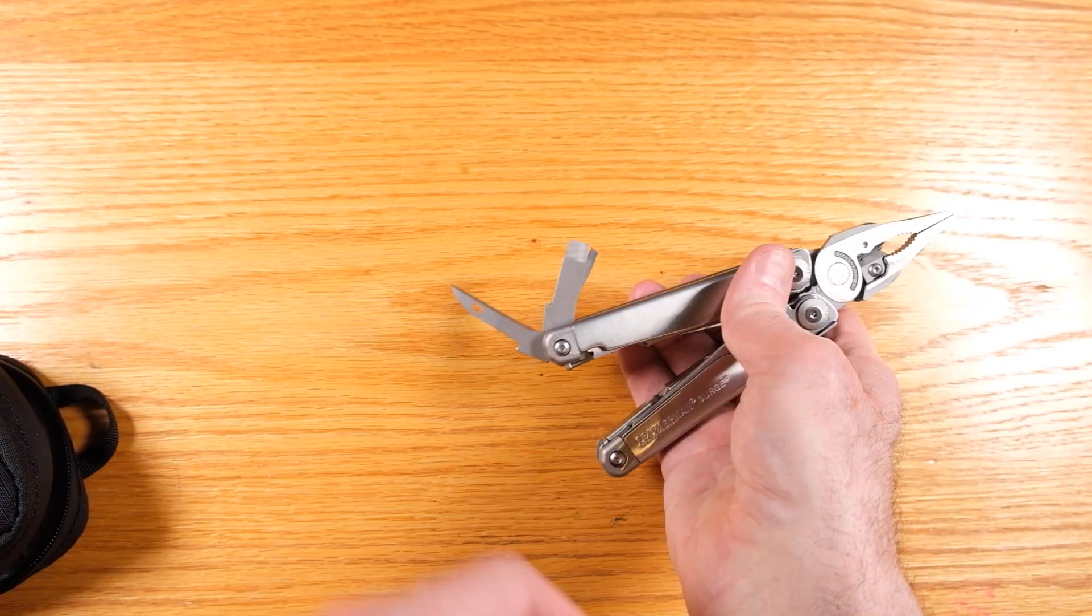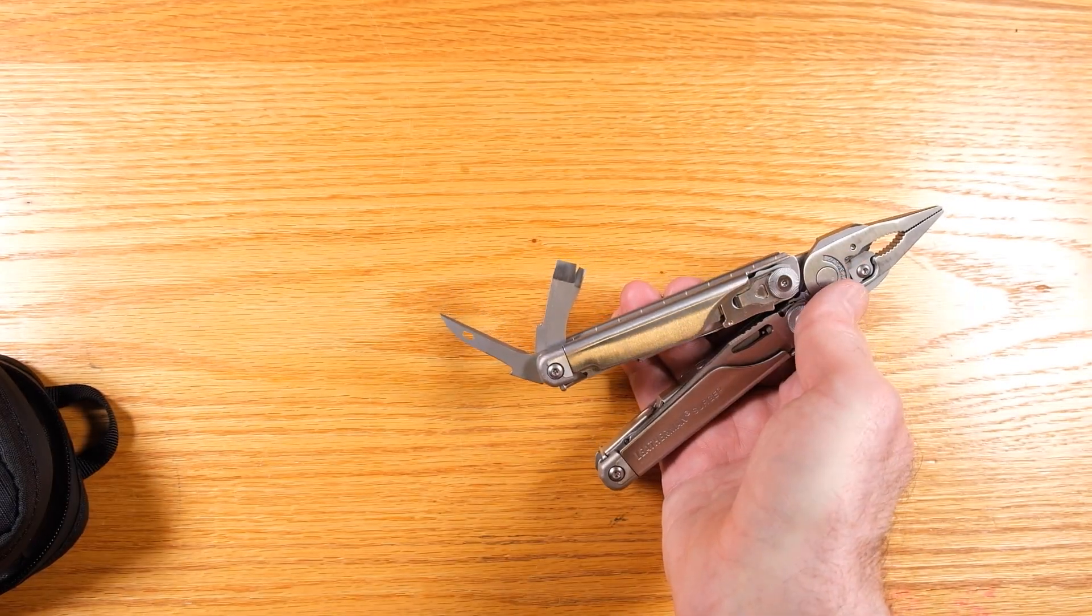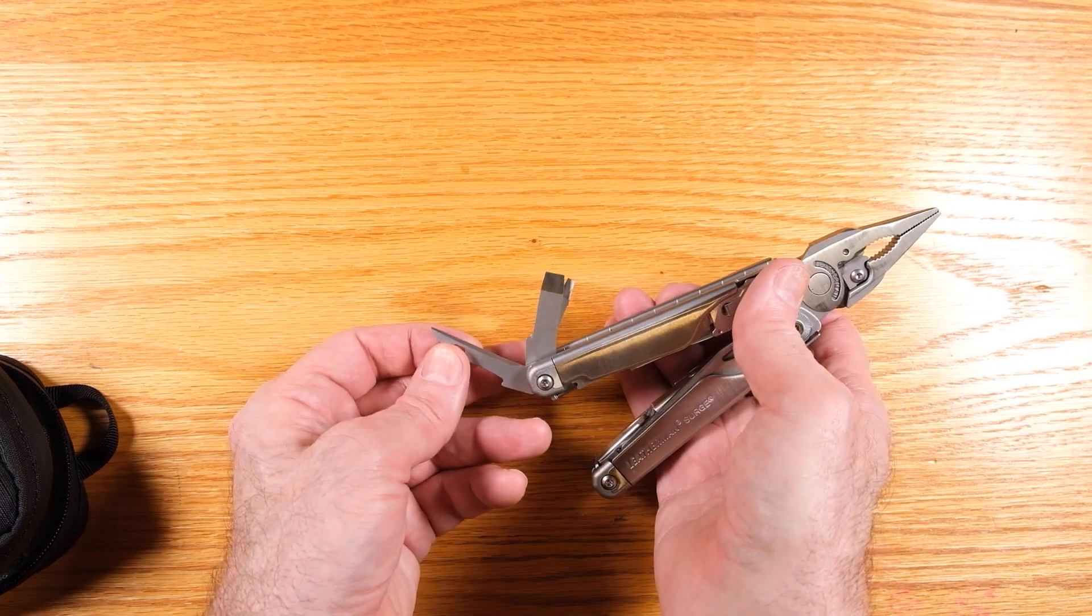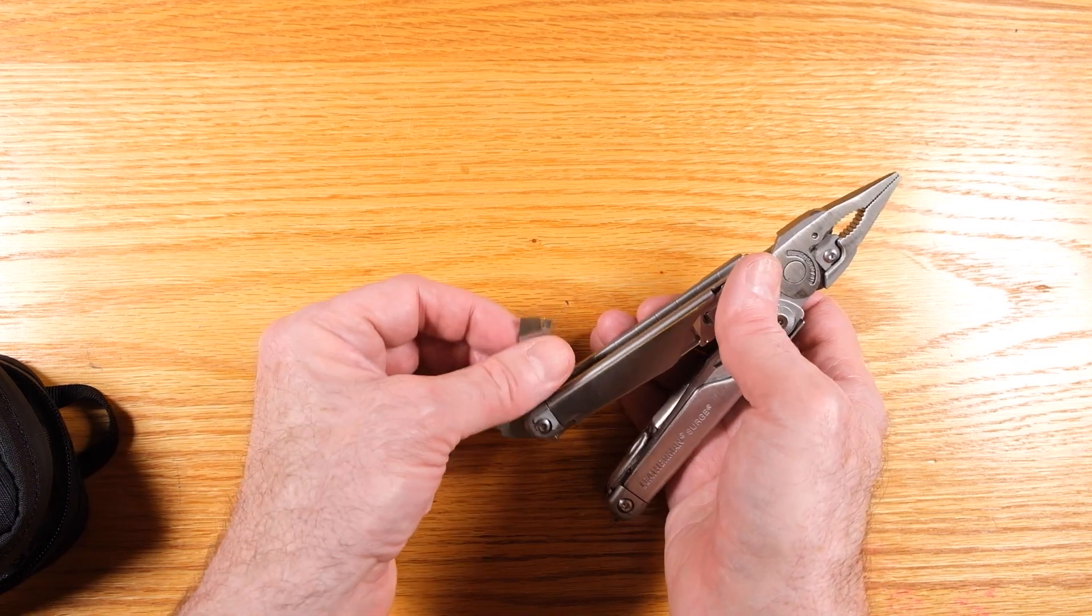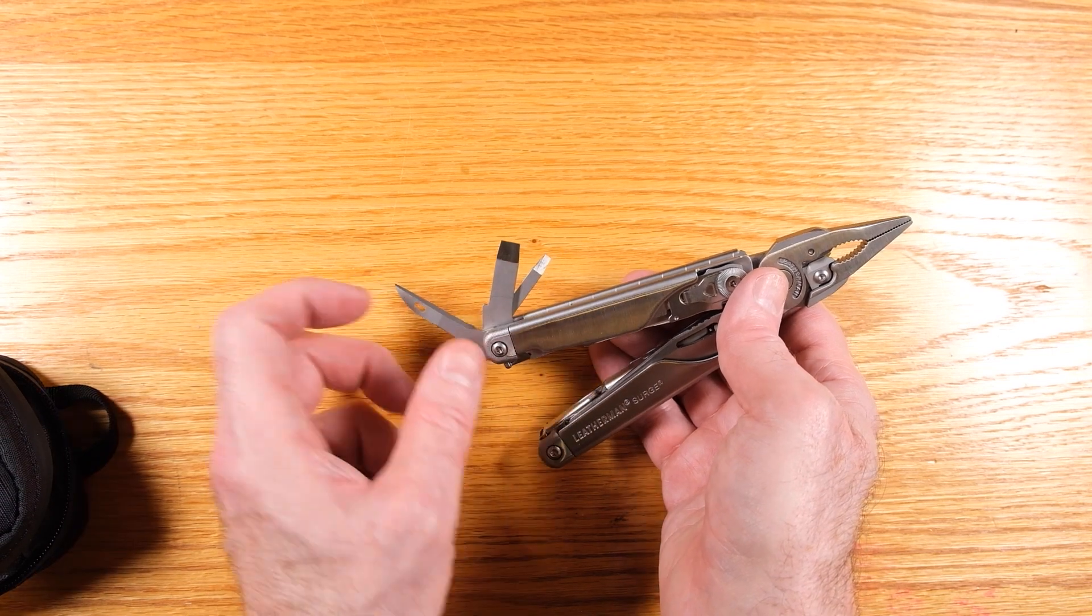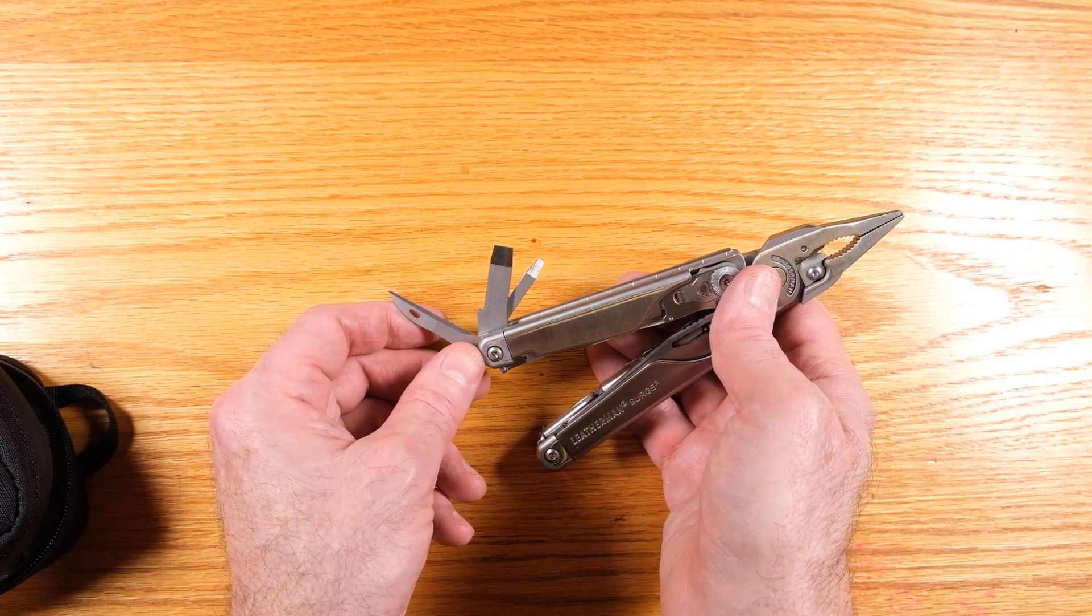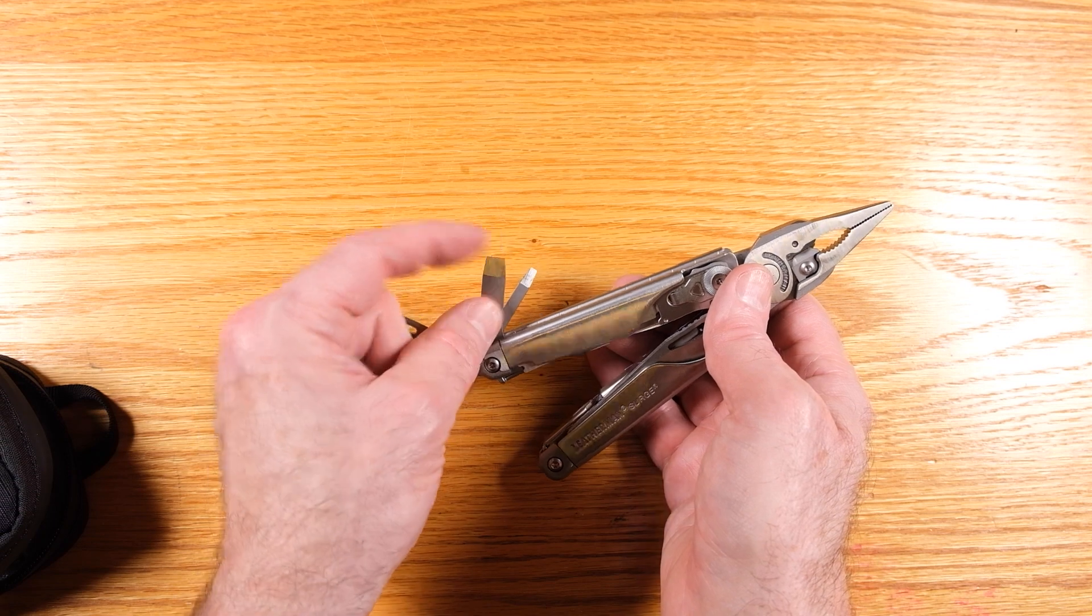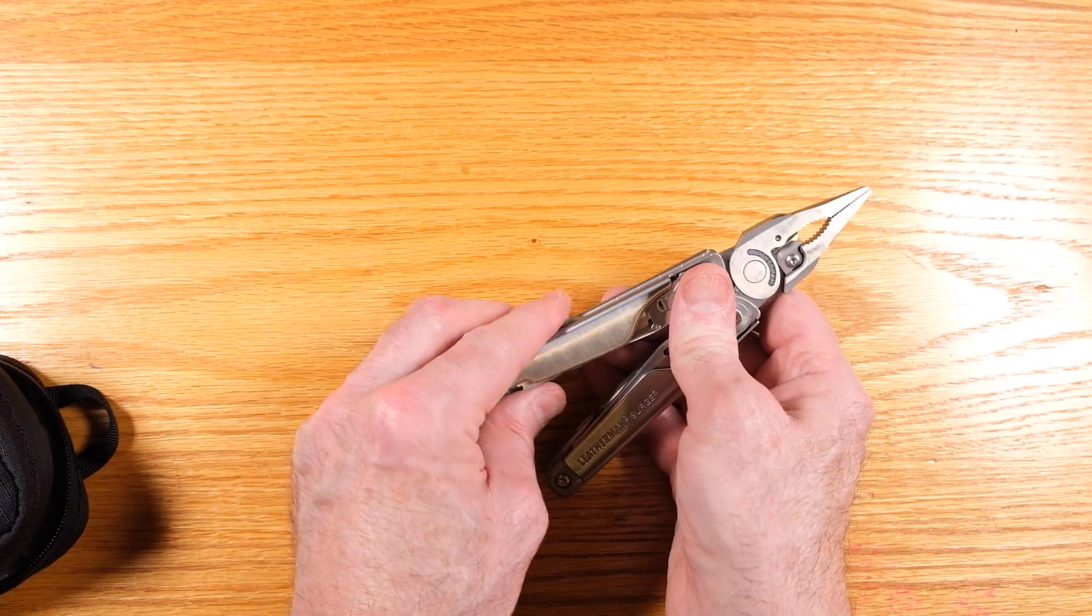So we've got an awl. So you can poke a hole in something. You can thread a line through here and you can sew up like heavy canvas or something like that. It's got two different flat bladed screwdrivers, a really big one, which you could maybe pry with a little bit, and a smaller one.